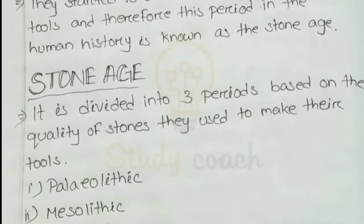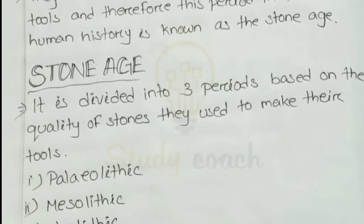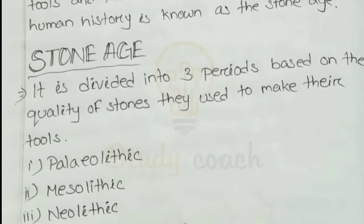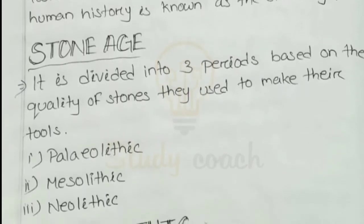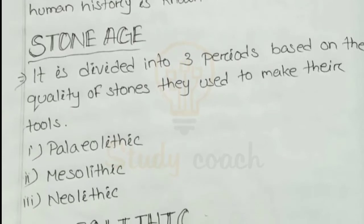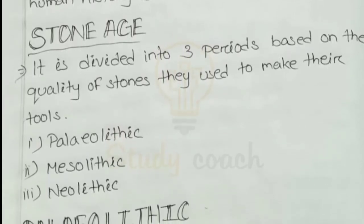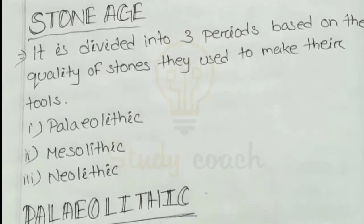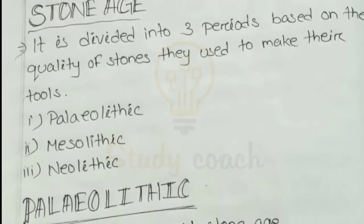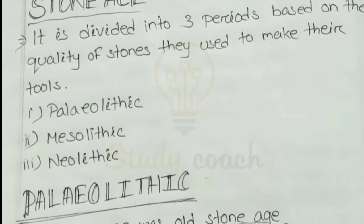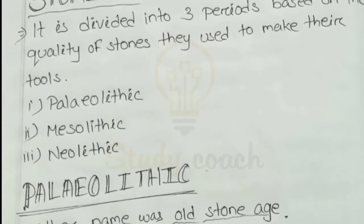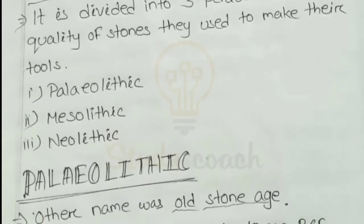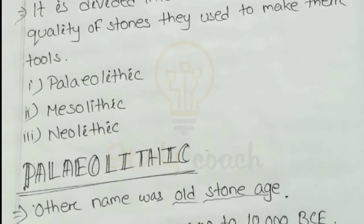Early humans used stones for making their tools for very different kinds of purposes. So this period is known as the Stone Age. What is the Stone Age? In this age, early men learned about the use of stones. The Stone Age is divided into three types based on the quality of stones they used to make their tools. The three types are: Paleolithic, Mesolithic, and Neolithic.